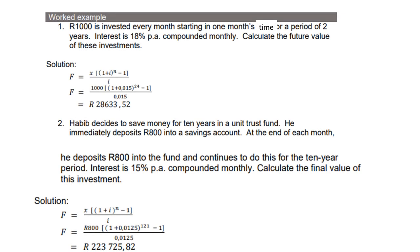Let's look at the worked example. R1000 is invested every month, starting in one month's time, for a period of two years. Interest is at 18% per annum compounded monthly. Calculate the future value of these investments. Write down the formula for future value, but take note, how do we calculate i. Remember, it is 18% divided by 100 first to convert to decimal, and then that answer divided by 12 to convert to monthly, which gives you 0.015. The period is over two years, so it is 2 times 12, which is 24 months. And then, your answer should be R28,633.52.